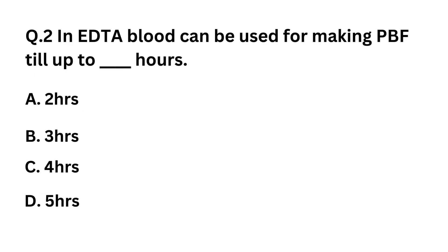Question 2: In EDTA blood, can we use it for making a peripheral blood film (PBF) up to how many hours? Option A: 2 hours. Option B: 3 hours. Option C: 4 hours. Option D: 5 hours.